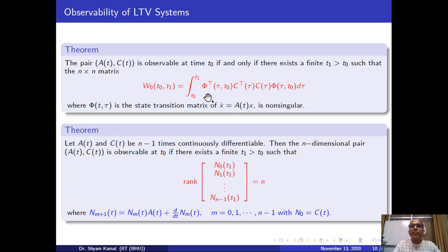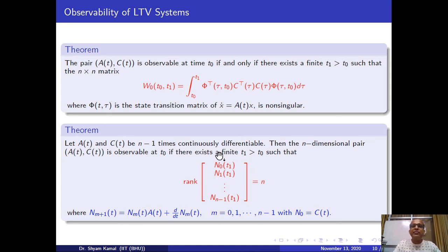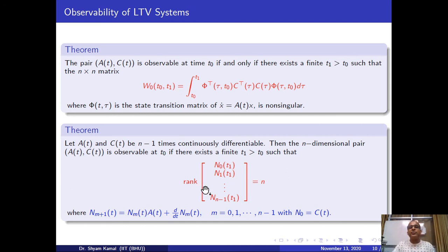The proof is straightforward by duality. Alternatively, if A(t) and C(t) are at least n−1 times continuously differentiable, one can avoid computing the state transition matrix by checking the rank of the matrix formed by M₀, M₁, …, Mₙ₋₁ — constructed analogously to the controllability case but in column form due to duality. In this way one can assess the observability of a linear time-varying system.